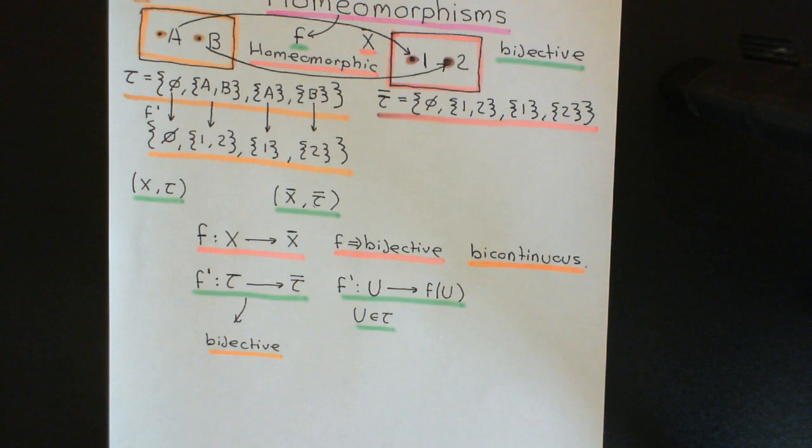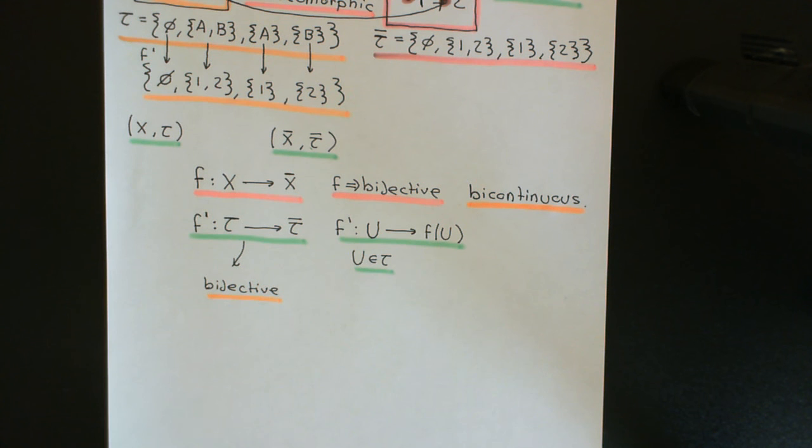So that is the formal definition of a topological homeomorphism. In the next video, I want to look at the more intuitive notion of what it means for two topological spaces to be homeomorphic by looking at some real examples.